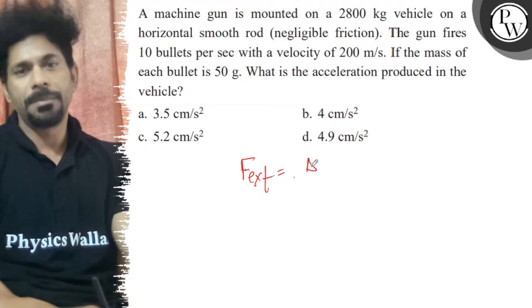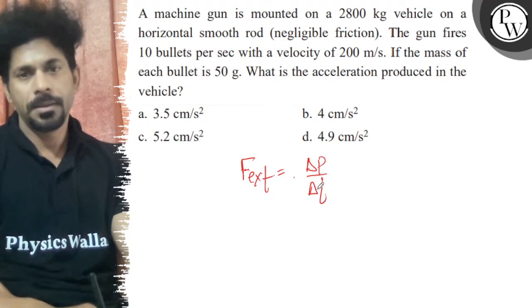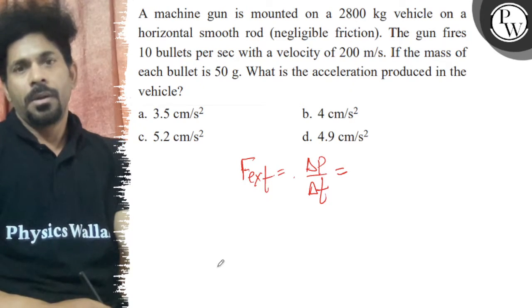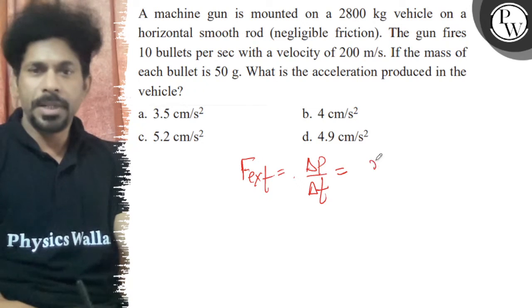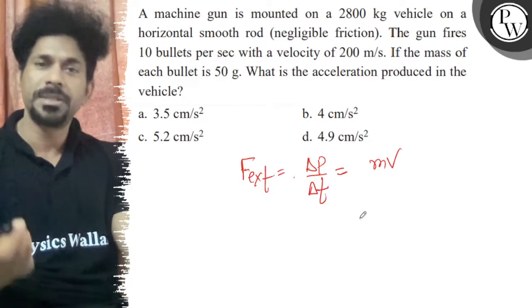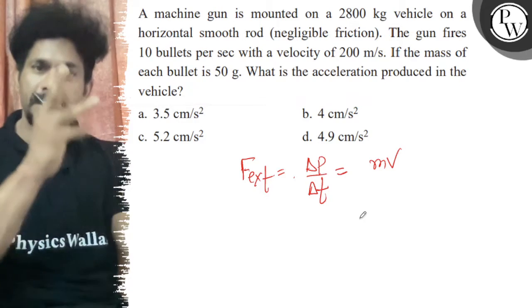That is equal to del p by del t. Each bullet has a mass mv and change in momentum of the bullet is mv because initially the bullet is at rest.